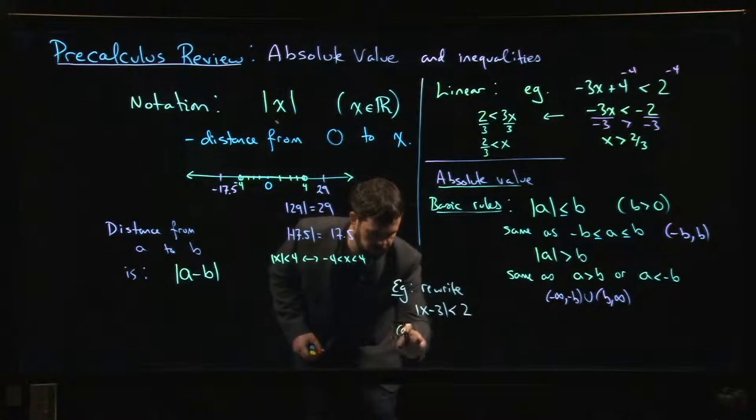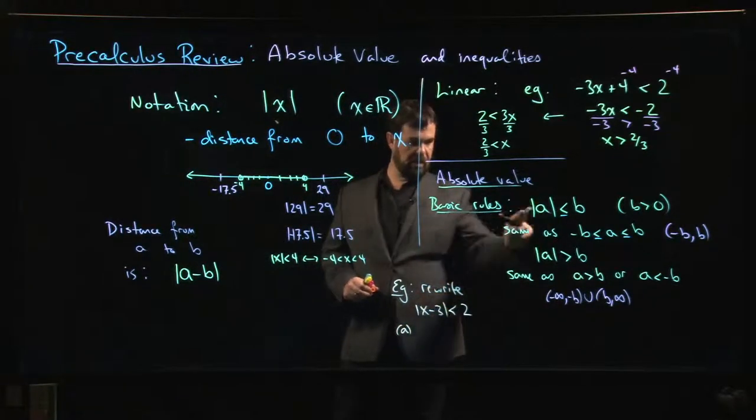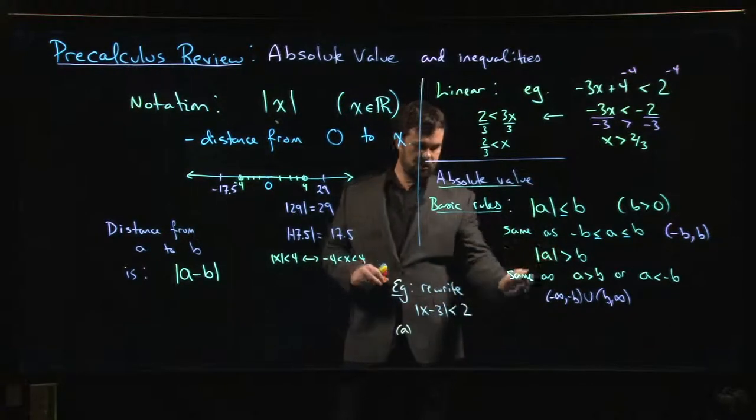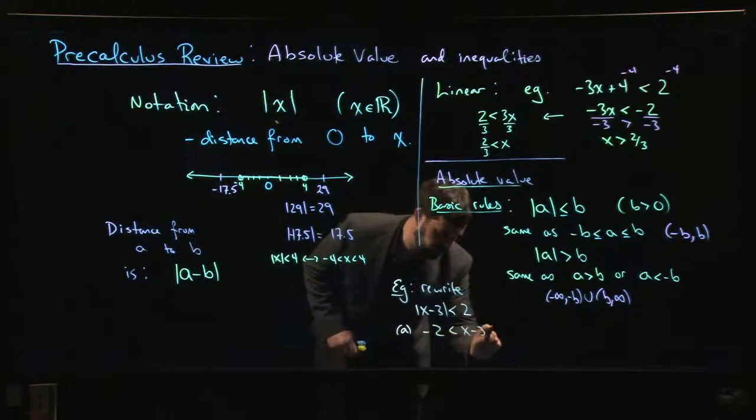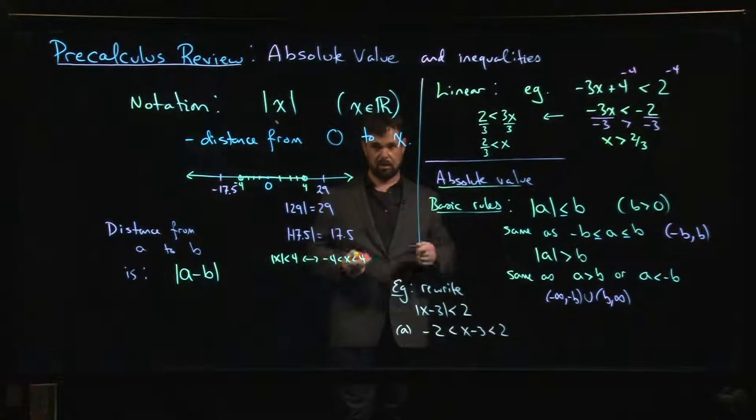So first step, apply this rule. Think of this x minus 3 as your a. Think of this as a single unit. 2 is your b. So we're going to get minus 2 less than x minus 3 less than 2. So now you've got one of these compound inequalities.